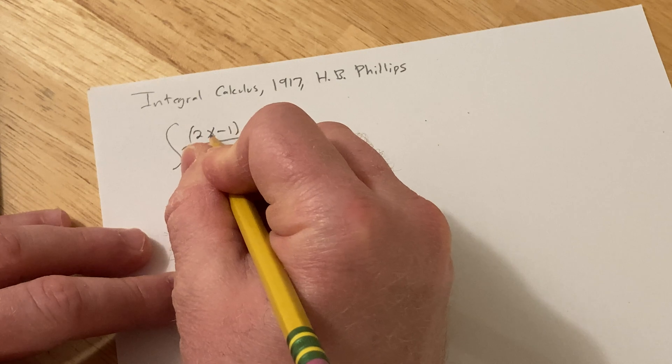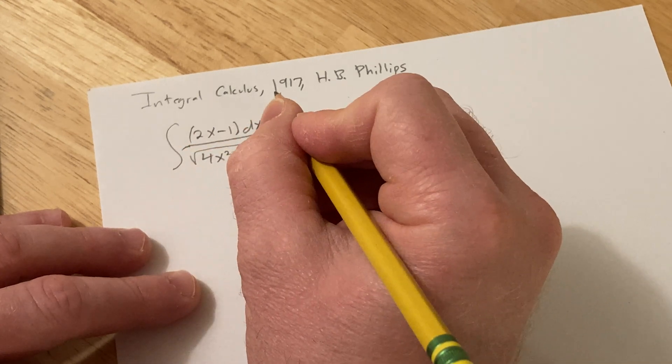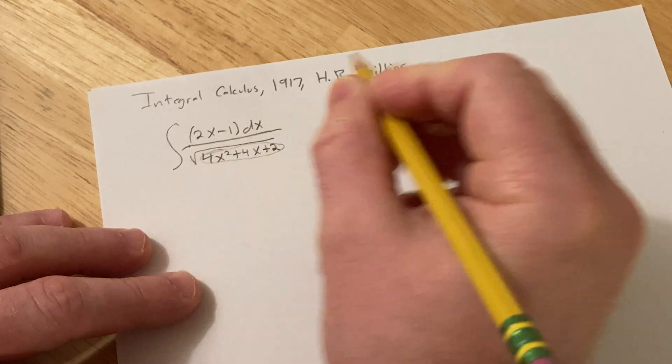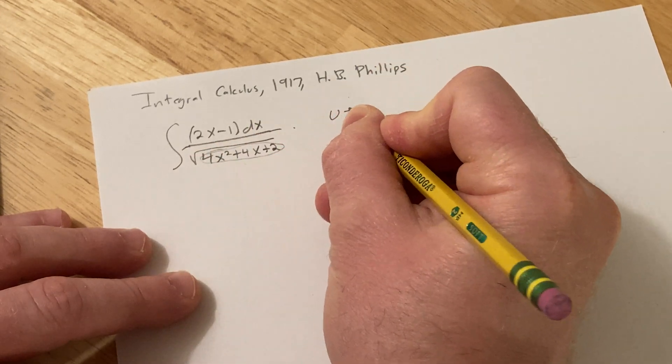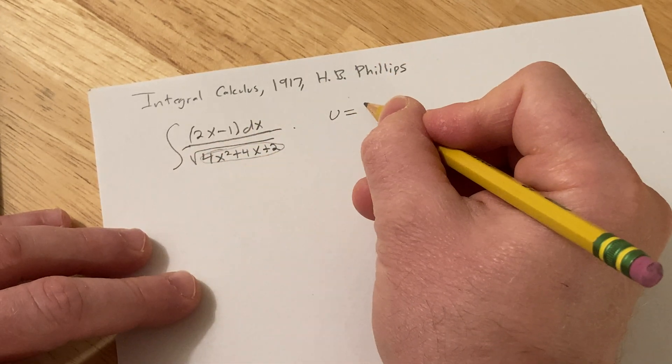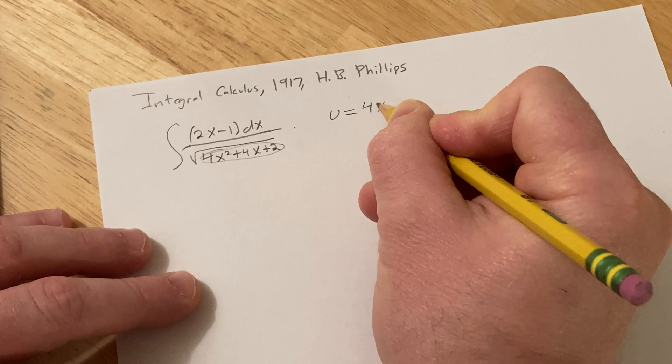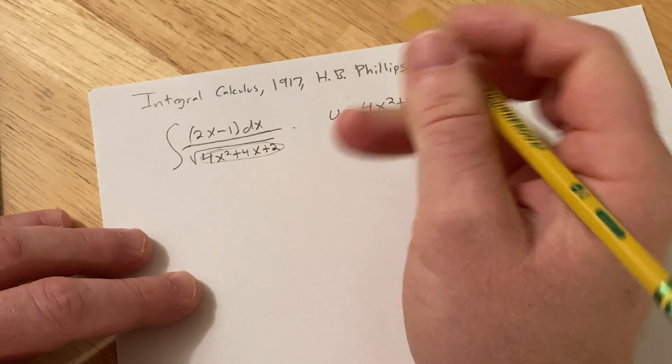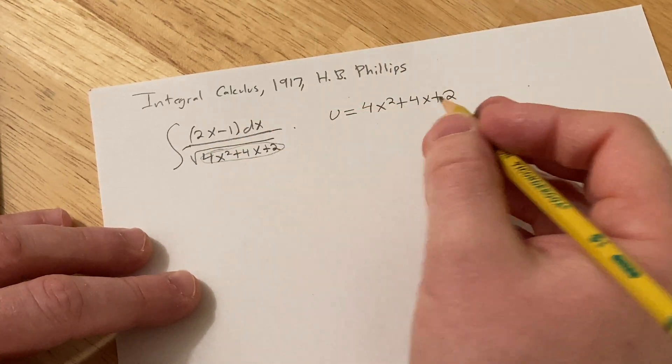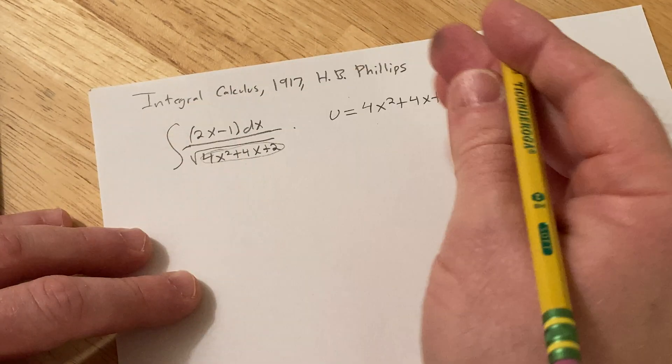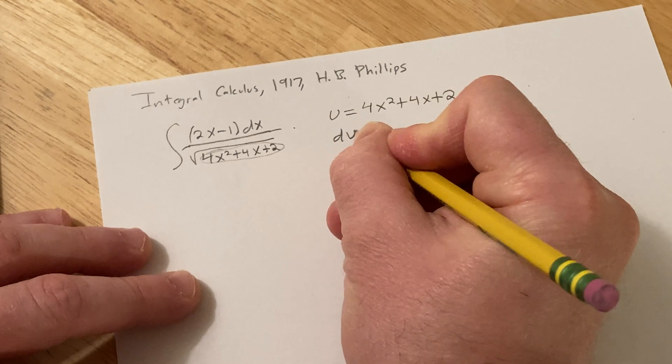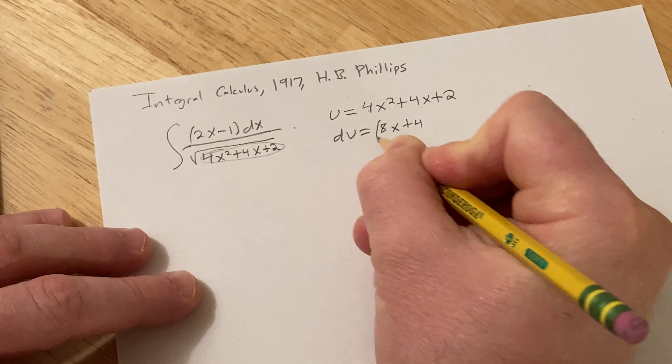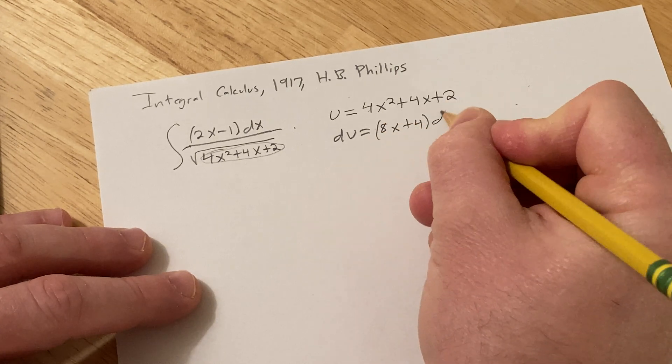Because we have an x here to the first power, I'm going to call this piece here u. We'll let u be what's inside the square root, so u is 4x² + 4x + 2. I'm going to go a little bit fast, I'm just going to do it. So du, taking the derivative, is going to be 8x + 4 dx, using the power rule.